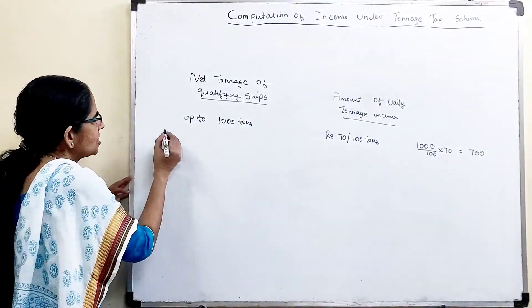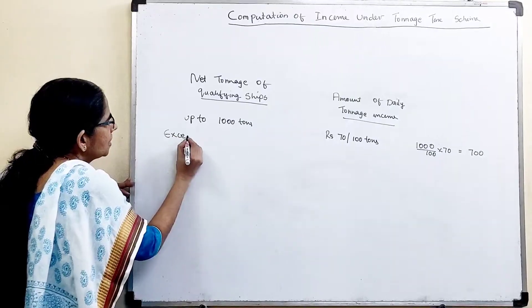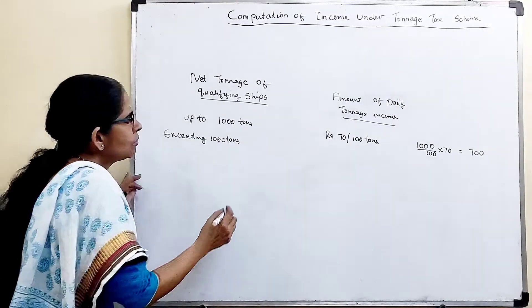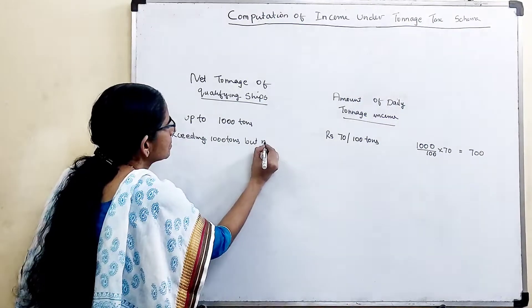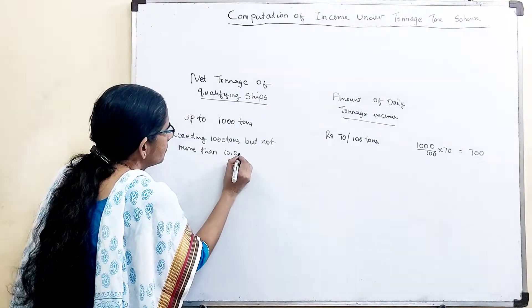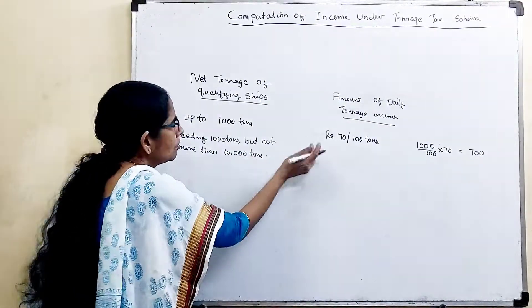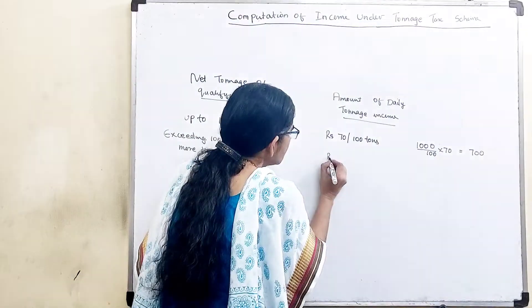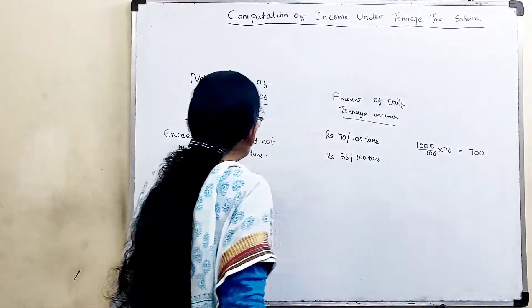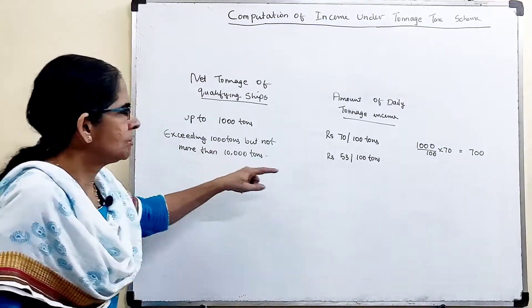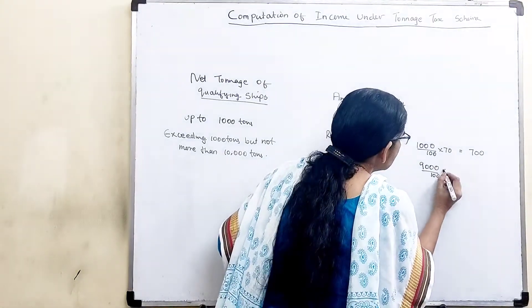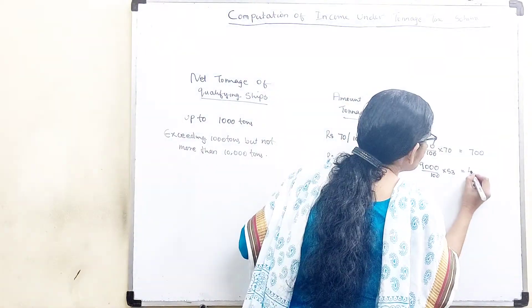Then, next one is exceeding 1000 tons but not more than 10,000 tons. 53 per 100 tons. So, 10,000 minus 1,000 you get 9,000. So, a total of 53 per 100 tons.